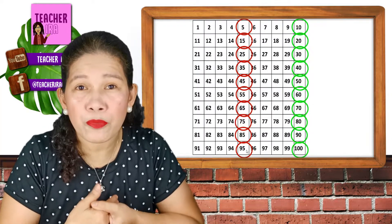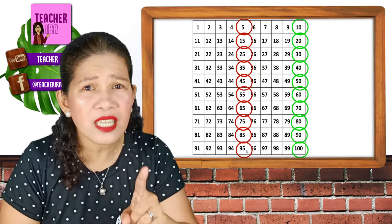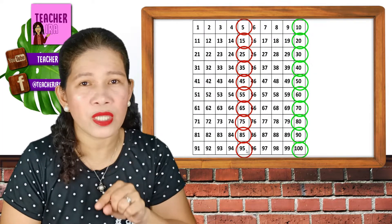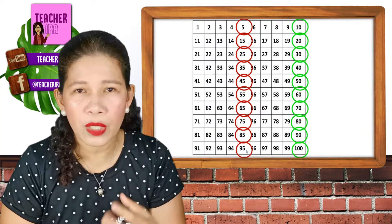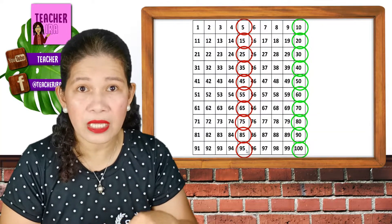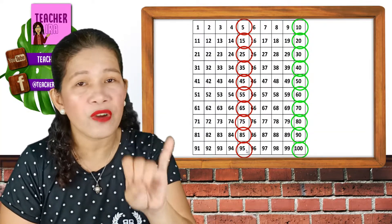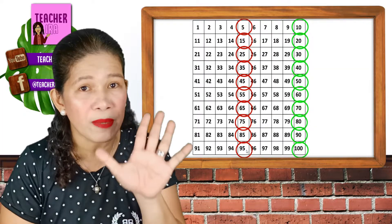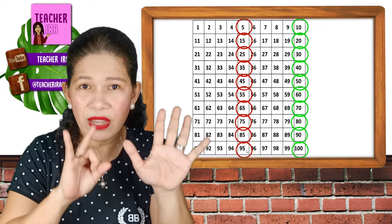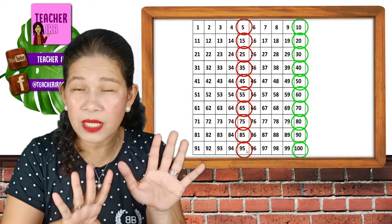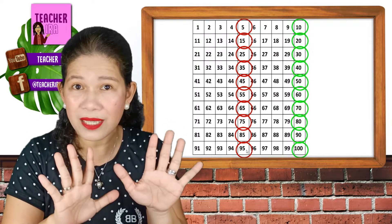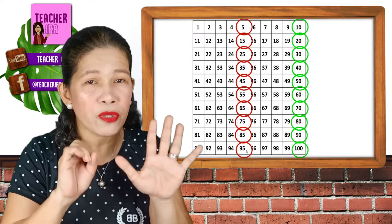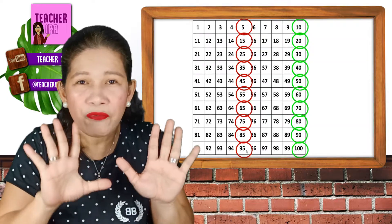We will do it up to 50 only. Children, this is the same with multiplication, you know that? When you know how to skip count, multiplication will become very, very easy. It's the same as 5 times 1, 5 times 2, 5 times 3, 5 times 4, 5 times 5, 5 times 6, 5 times 7, 5 times 8, 5 times 9, 5 times 10. So it's 5, 10, 15, 20, 25, 30, 35, 40, 45, 50.